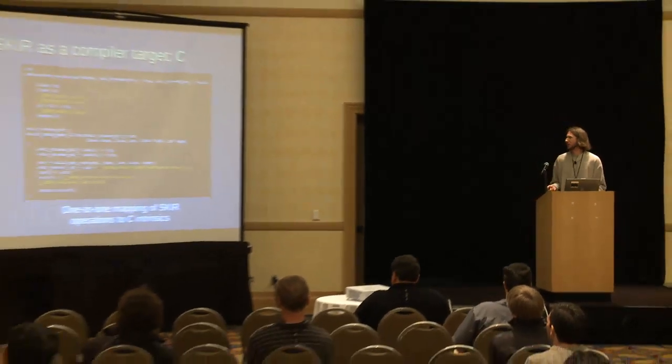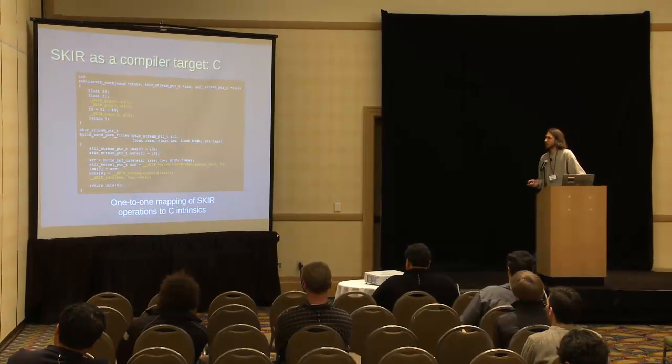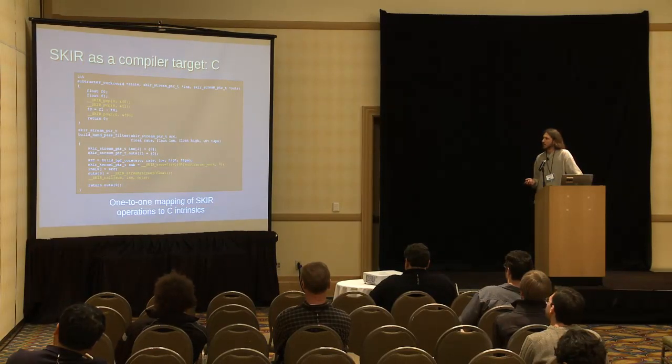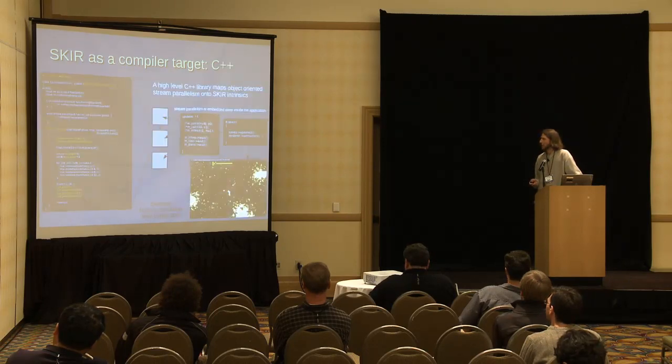The easiest way to access these intrinsics is through a one-to-one mapping of SKIR operations to C intrinsics, which is pretty straightforward. Here's a kernel that just pops two things off an input stream, subtracts them, and pushes the result to the output.